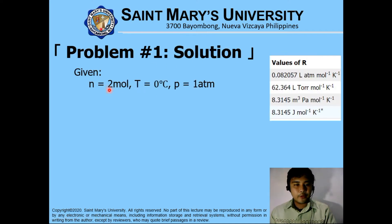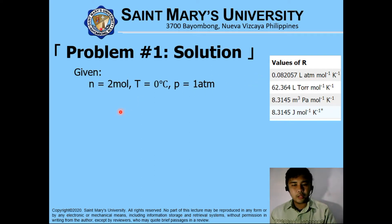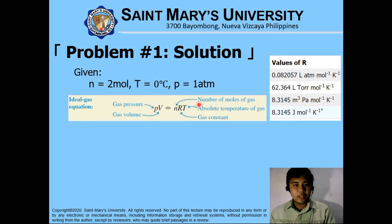We have here given 2 moles, temperature at standard temperature, 0 degrees Celsius. Our standard pressure is 1 atmosphere. We have here the values of our R. We have to relate it to atmosphere, or if we do not want to relate it in terms of atmosphere, in Kelvin and in moles, we could actually just convert it using the link provided. Basically, we have here the ideal gas equations.